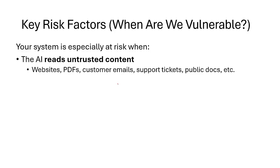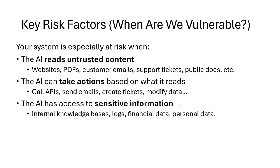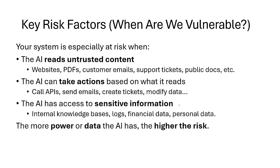Now let's understand when you are vulnerable. Your AI system is specifically at risk when AI reads untrusted content — meaning you copy-paste and told it to read everything, which can include websites, PDFs, and customer emails. Second, when AI can take actions based on what it reads — like call APIs, send emails, create tickets, modify data. You want a human factor to authenticate high-risk actions. Third, when AI has access to sensitive information like internal knowledge bases, logs, or financial data. The more power or data the AI has, the higher the risk.